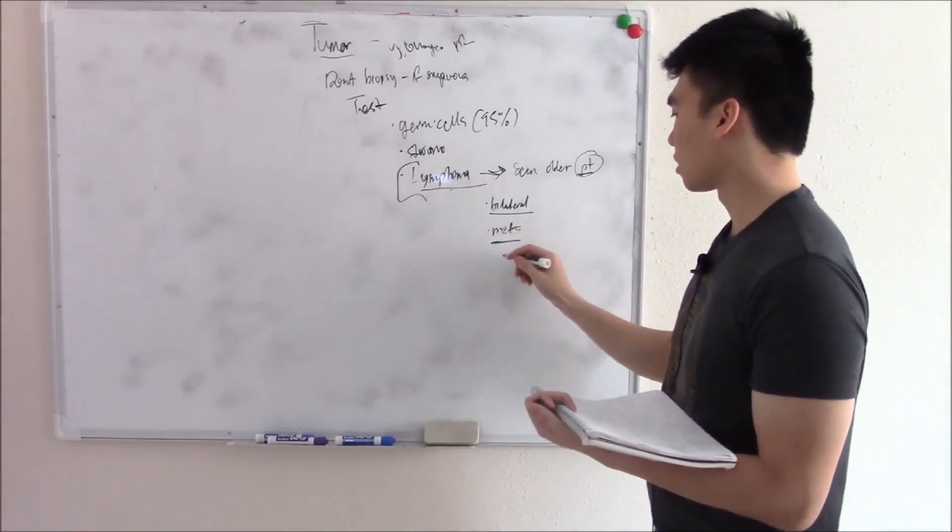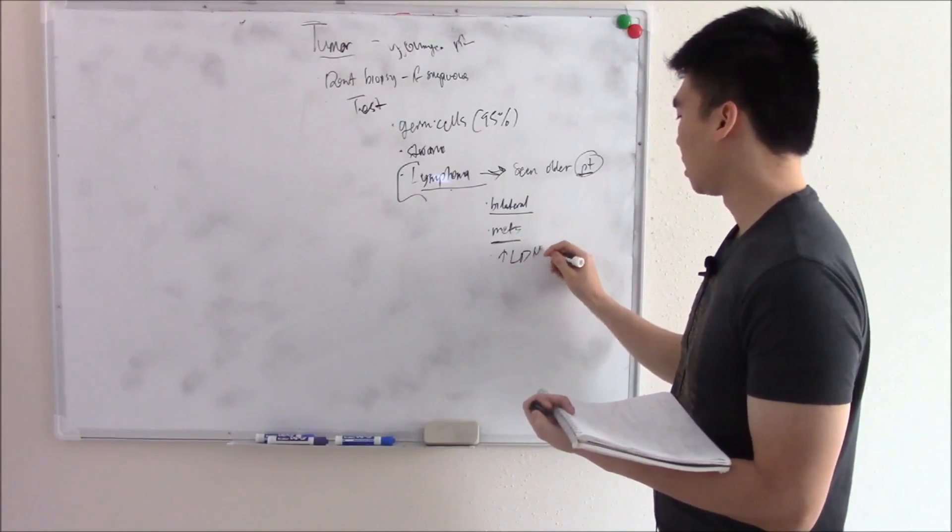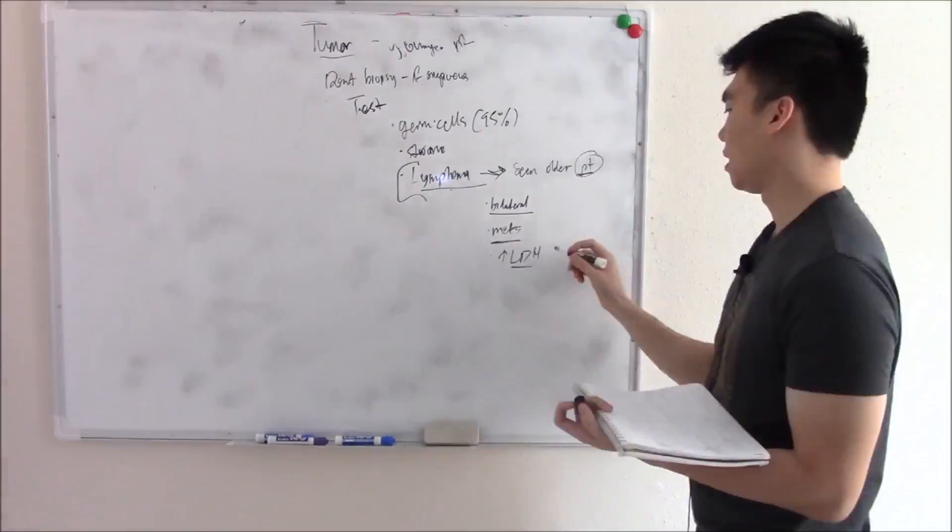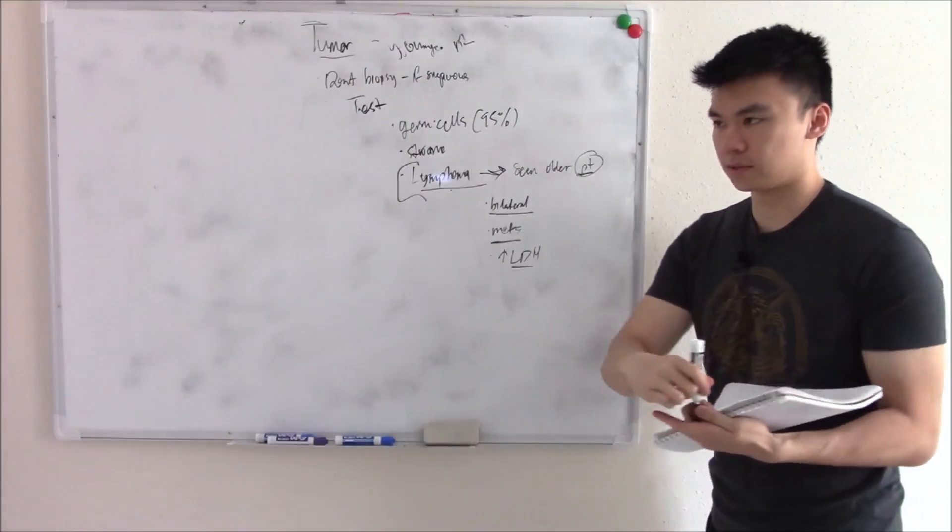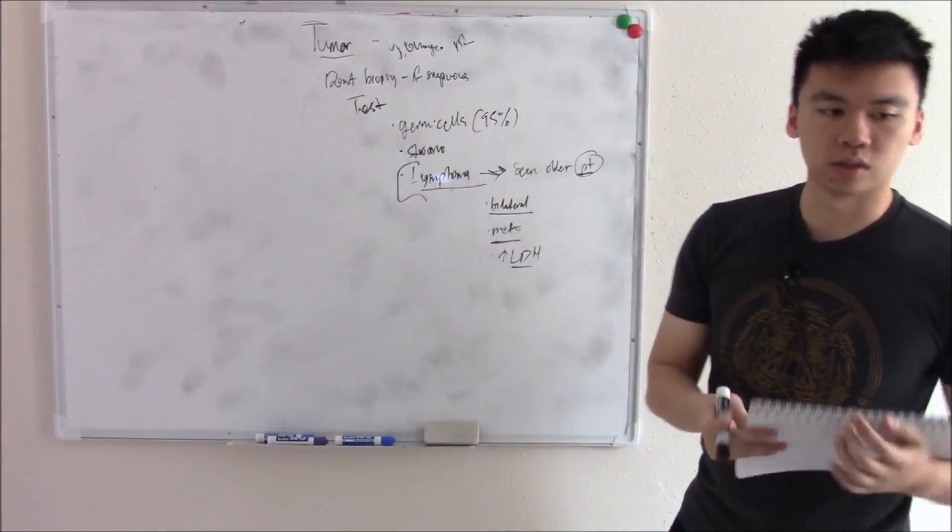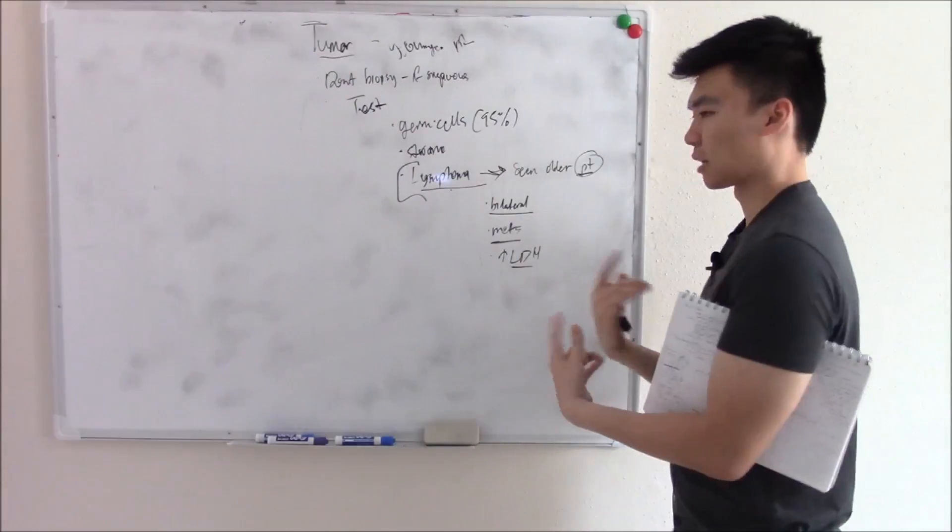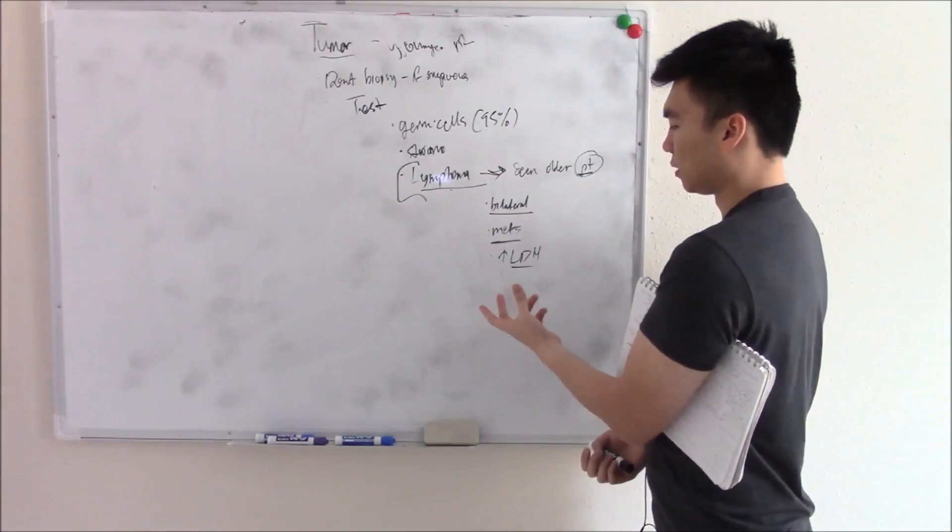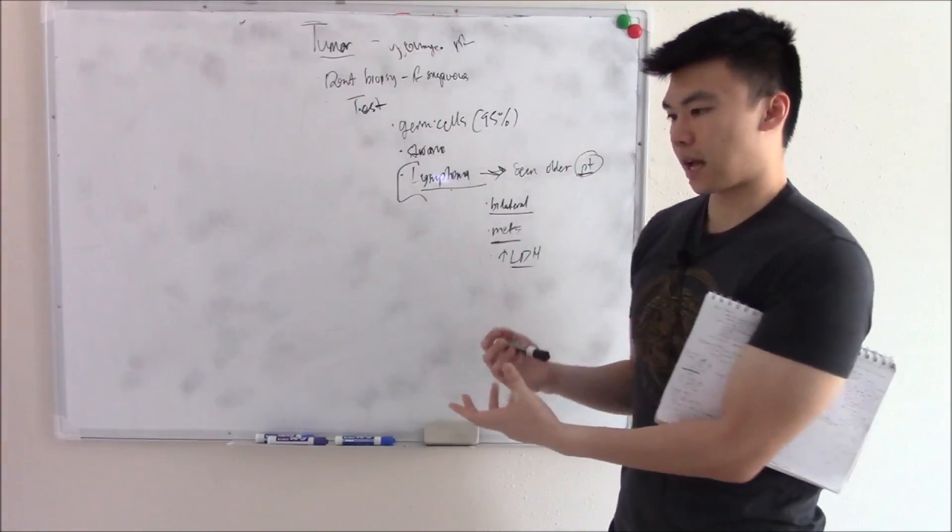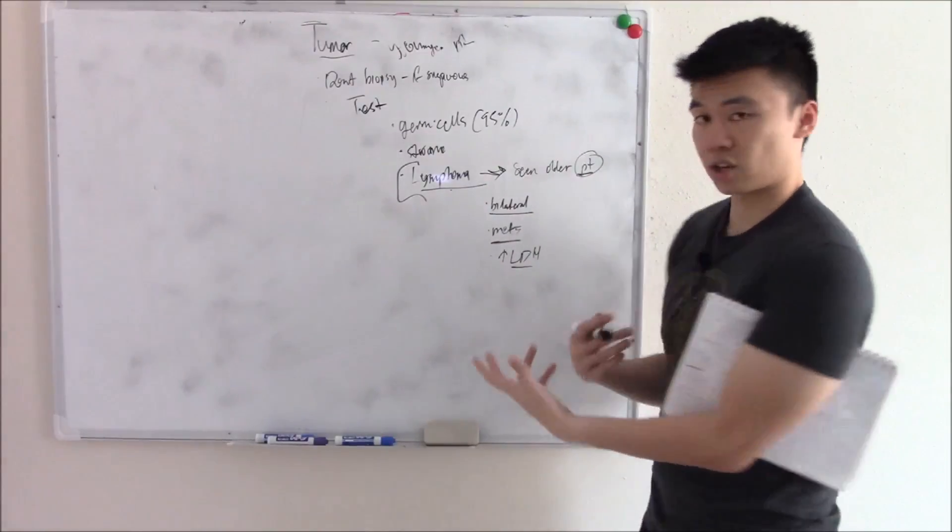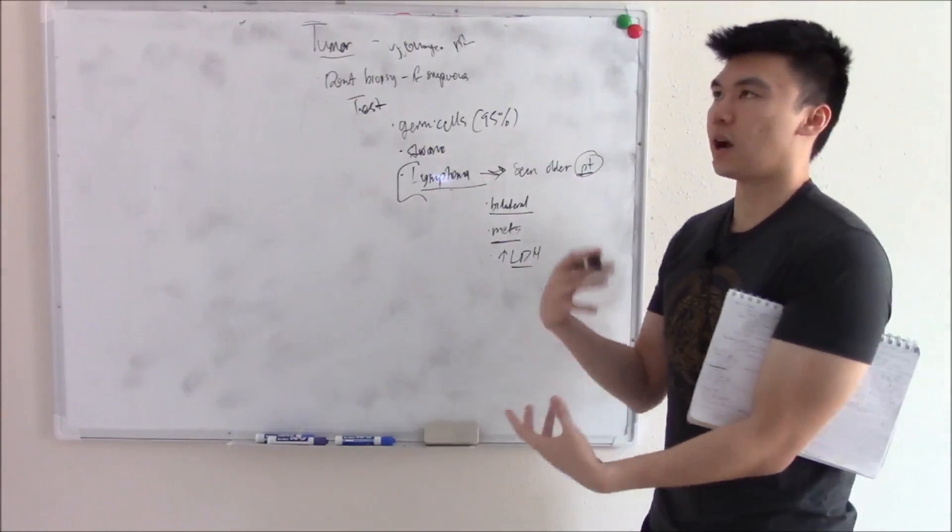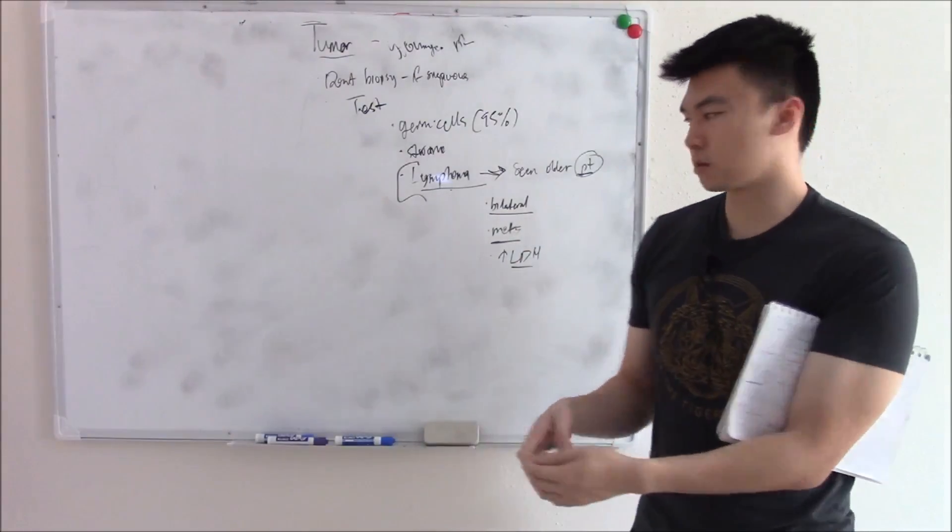One of the markers is elevated LDH. That's lactic dehydrogenase. Lactic dehydrogenase. This is just some side information. I don't think they'll quiz you on it. Lactic dehydrogenase converts pyruvate and lactate during glycolysis.